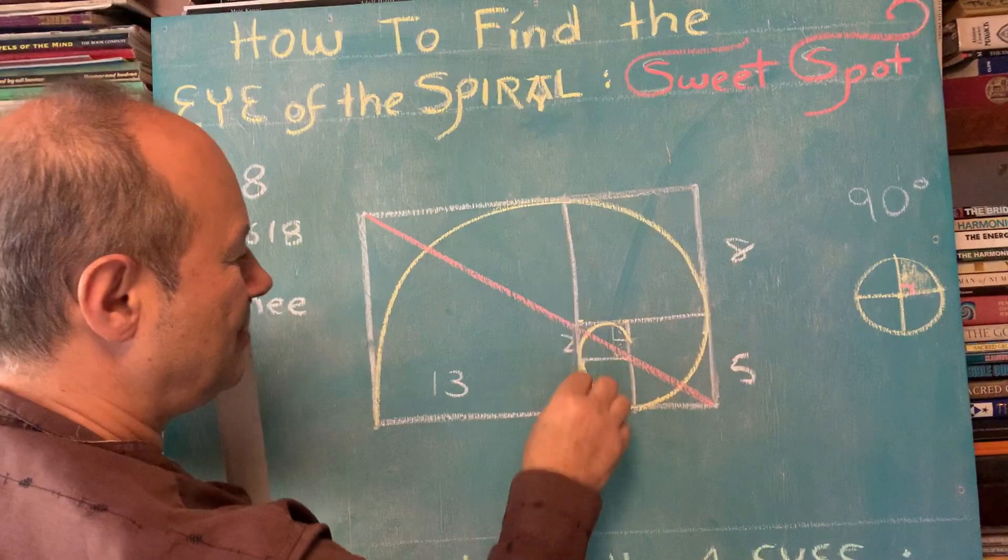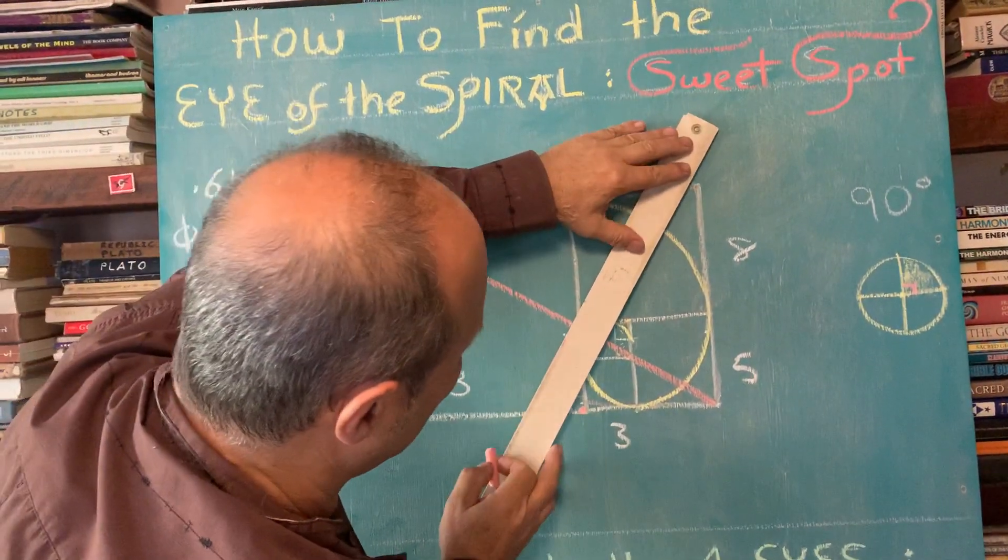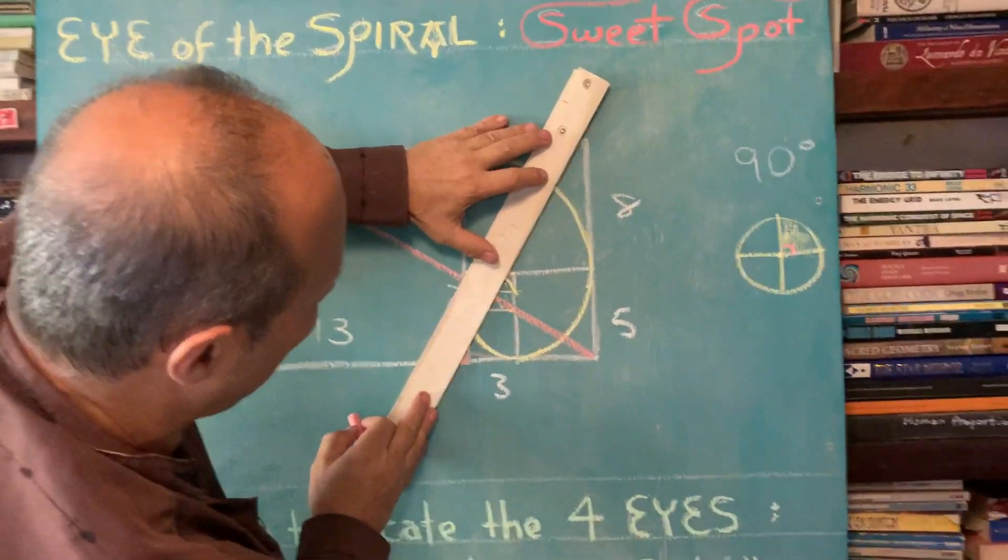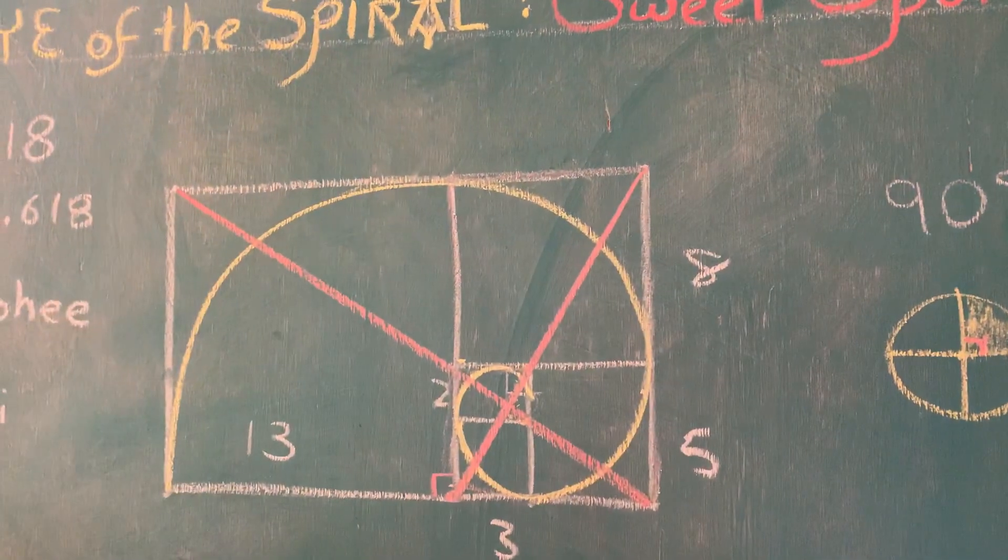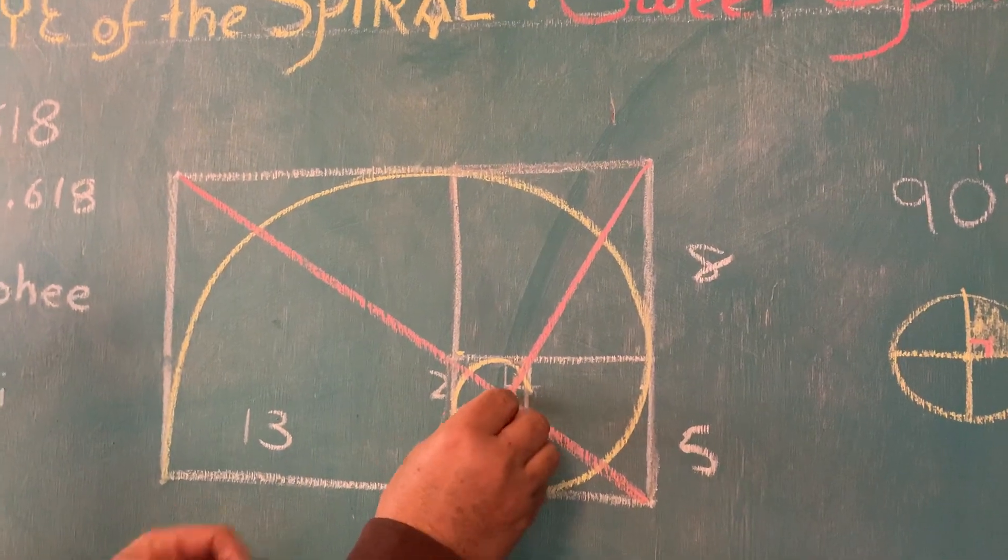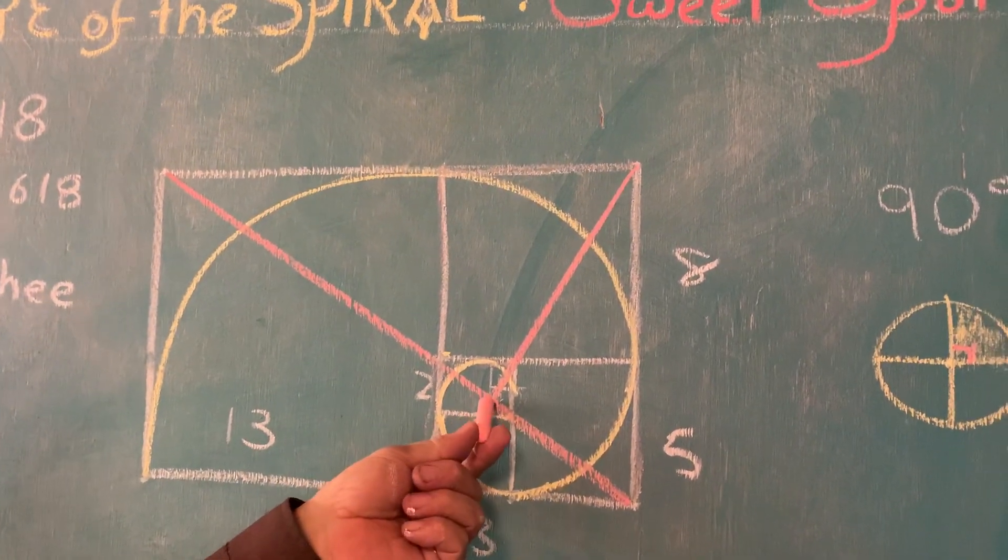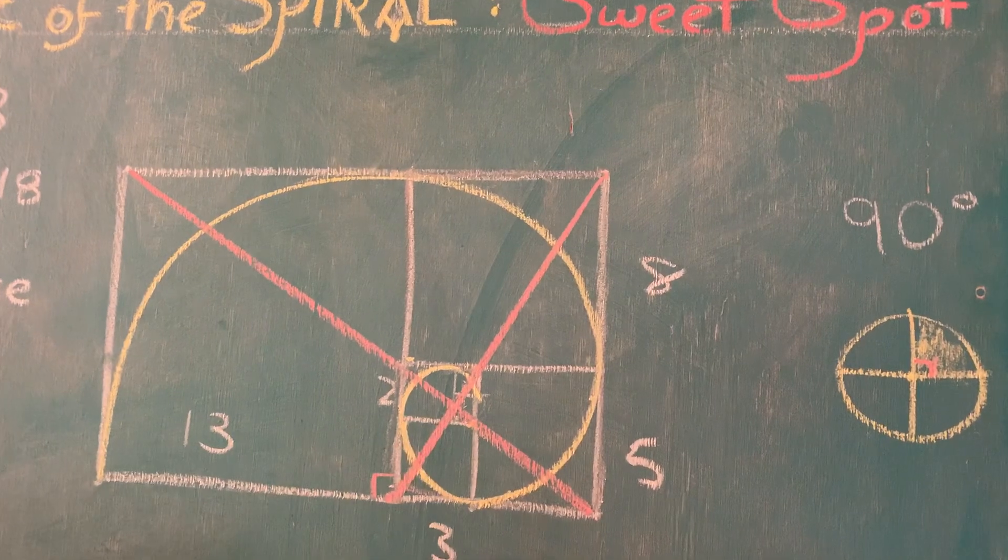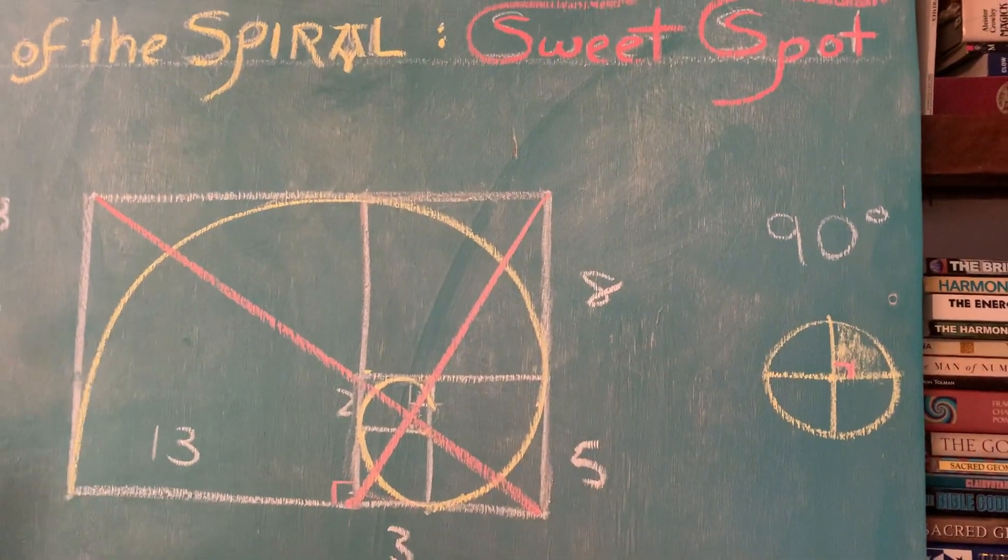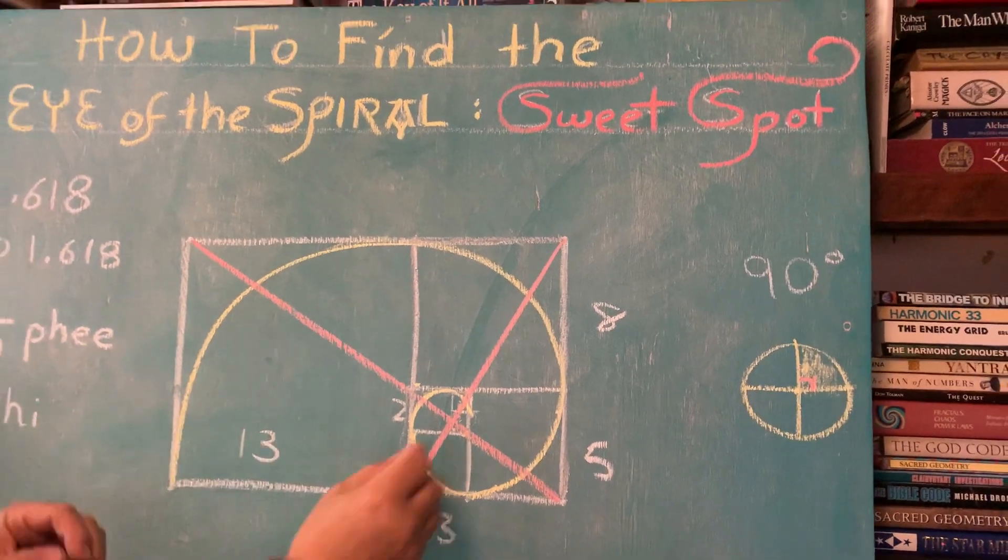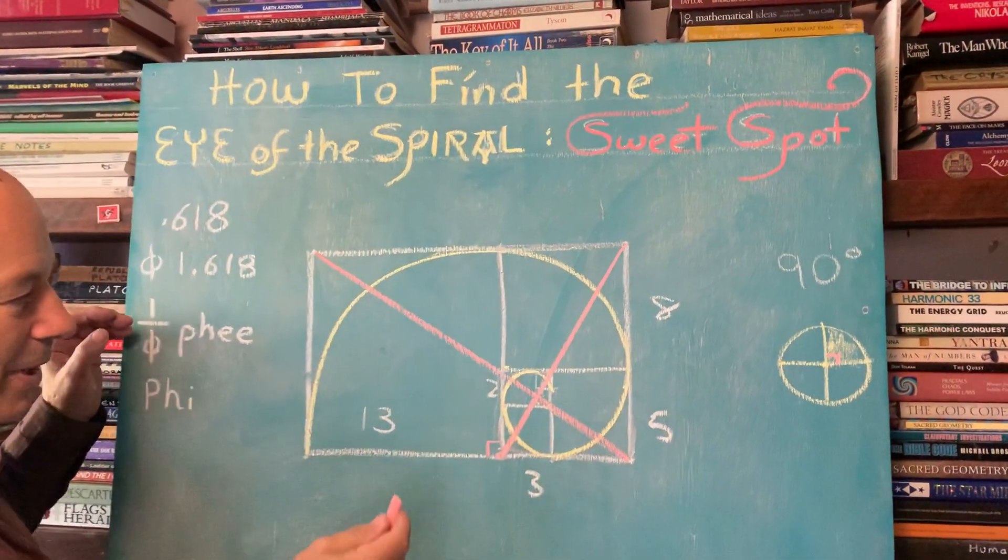One, two, three, four. I'm going to draw this in. And what happens is that when we draw in this diagonal, the most pertinent observation is that they intersect at 90 degrees. Back to this quadration of the circle, this 90 degree is the doorway in and out of the dimensions. That's a very critical point.